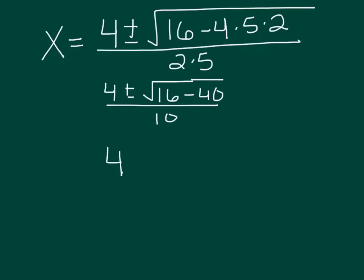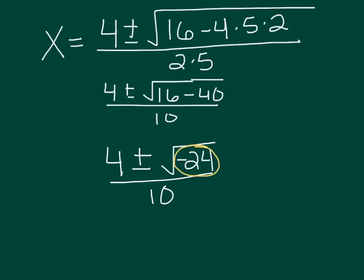So we have 4 plus or minus the square root of negative 24, all over 10. If you ask what the discriminant is, you just look at the number underneath the radical sign — don't take the square root of it. The discriminant is negative 24, and because it's negative, we know that when we take the square root we're going to have two imaginary solutions. The discriminant tells us the number of solutions is 2 and the type is imaginary.